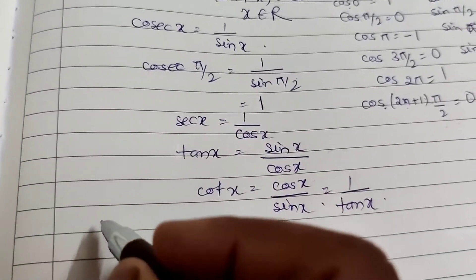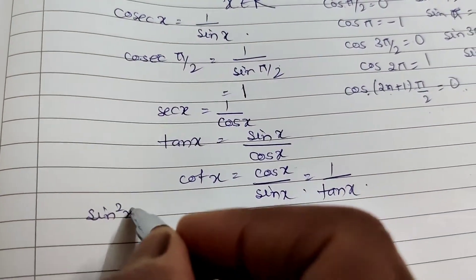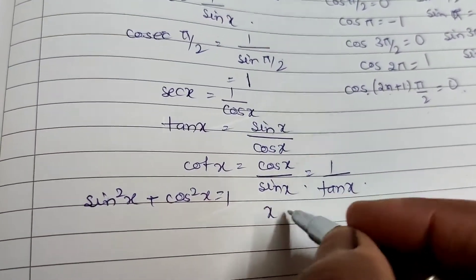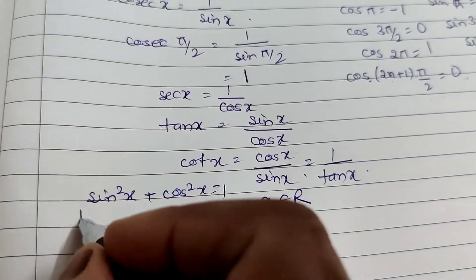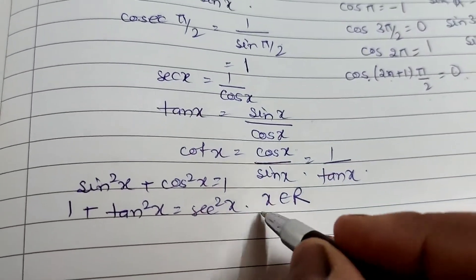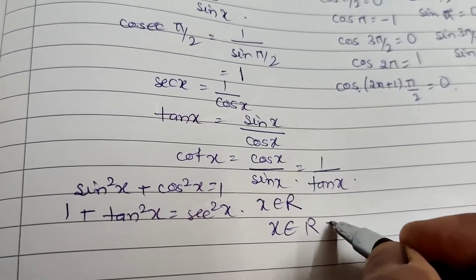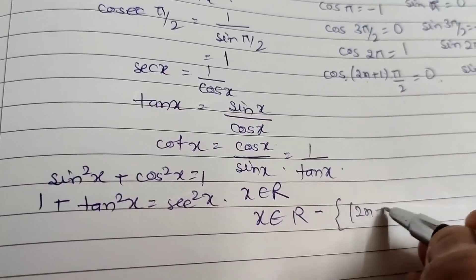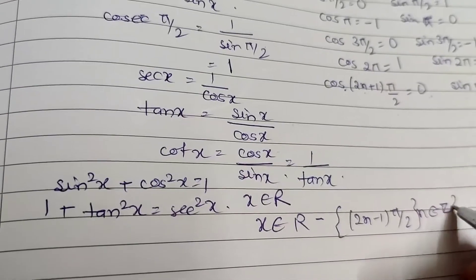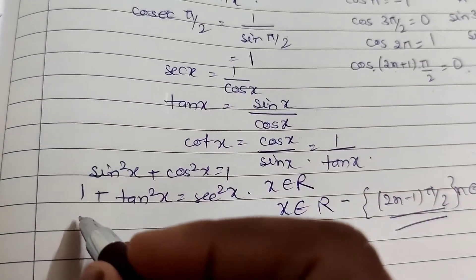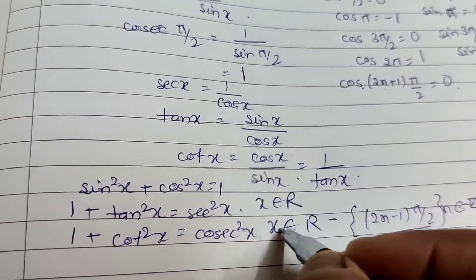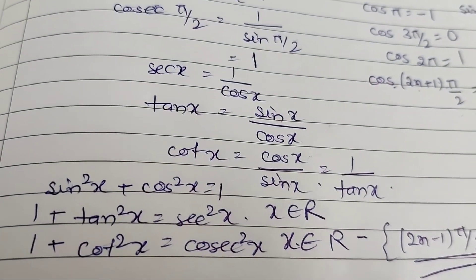Now the three important identities: First, sin²x + cos²x = 1 for all real values. Second, 1 + tan²x = sec²x for all real values except x = (2n-1)π/2, where n is an integer — this value is not defined. Third, 1 + cot²x = cosec²x. These three identities will be used in the next exercise.